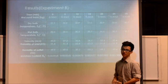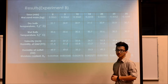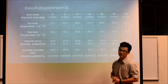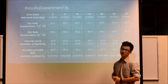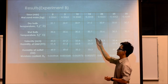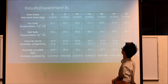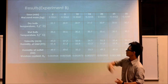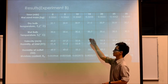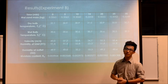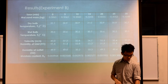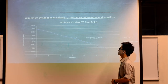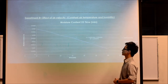Moving on to Experiment B. Unlike Experiment A, this time the velocity of air is manipulated while the temperature of the surrounding and the humidity are kept constant. The wet sand mass decreases with time from 0 to 30 minutes due to the drying process. As the difference between the dry bulb temperature and the wet bulb temperature increases, the drying rate increases as well. The rate of drying from the graph is negative 0.000106, determined from the gradient.